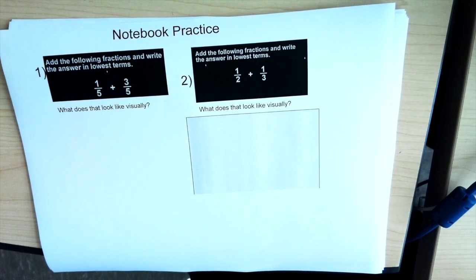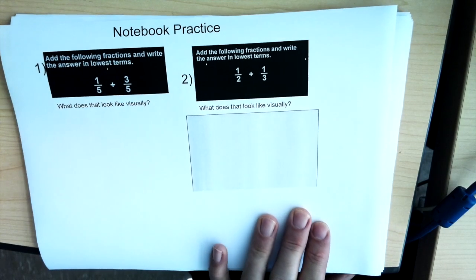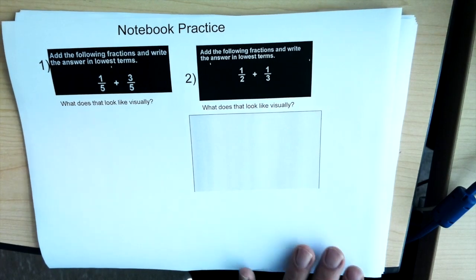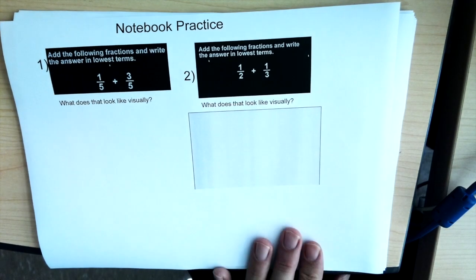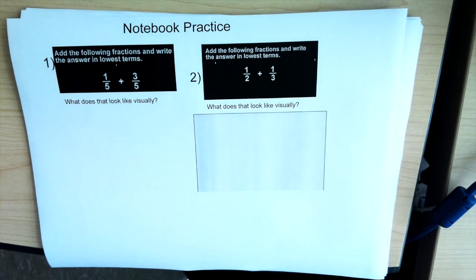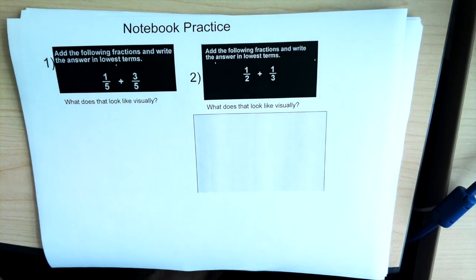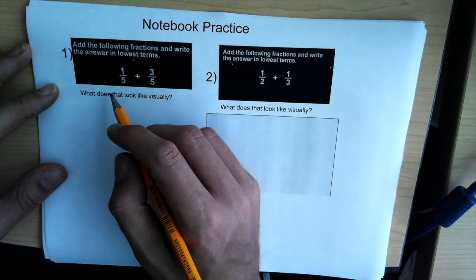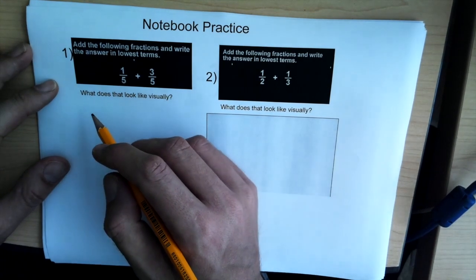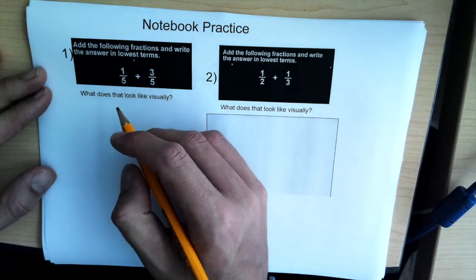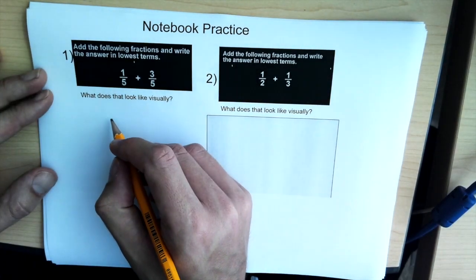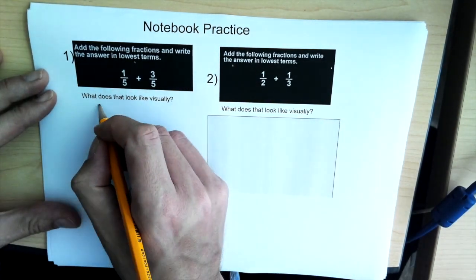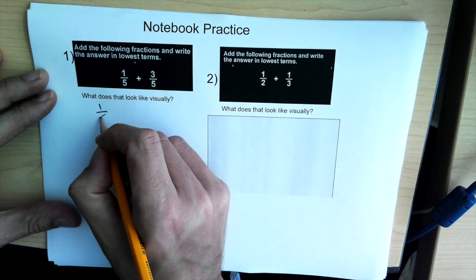Let's get started with adding and subtracting some fractions. We're going to do these both visually with a drawing and also numerically. It says add the following fractions and write them in lowest terms. So we have one-fifth plus three-fifths.